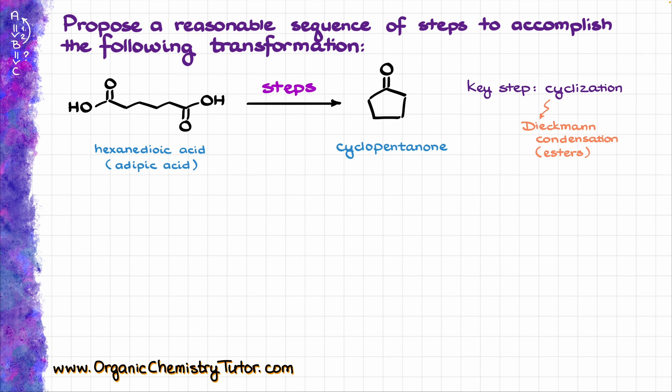That kind of paints my picture already, so I know that my first step is going to be the esterification of my carboxylic acid. I will start with a simple Fisher esterification using ethanol as the alcohol in the presence of tosylic acid as my catalyst, and as a result I'm going to get the corresponding diester.